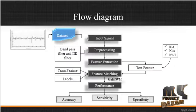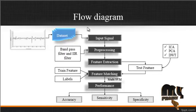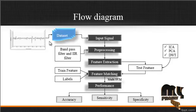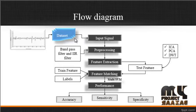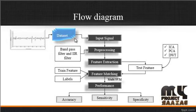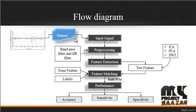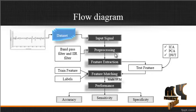Now we are going to discuss the flow diagram for the process. This is the overall workflow. First, the input signal is taken from the dataset, which is a folder consisting of several signals — both normal and abnormal. After selecting a signal from the dataset, pre-processing is carried out.